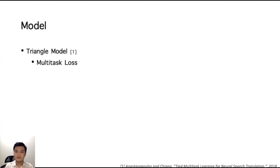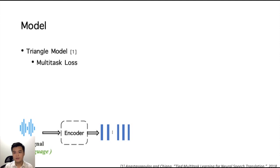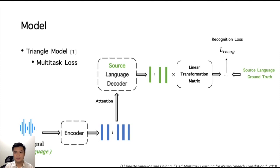Here we introduce the structure of the multi-task ST model. We use the triangle structure proposed previously. The encoder firstly takes the speech signal and outputs a sequence of hidden states. And the source language decoder will attend on the hidden state for source language decoding. A recognition loss can be computed.